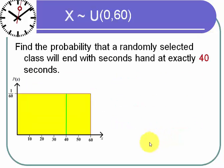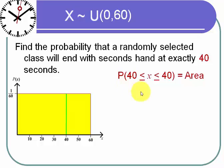That feels wrong but it is right. Even though it's possible for the second hand to be at exactly 40 when class ends, the probability is 0. When you have a continuous random variable, you have an infinite number of possibilities. There's only one way to win — exactly 40 — but there are infinitely many possibilities between 0 and 60. One over infinity goes to 0, as you learn in calculus. So the probability that the second hand is exactly at 40 is 0, even though it can happen.